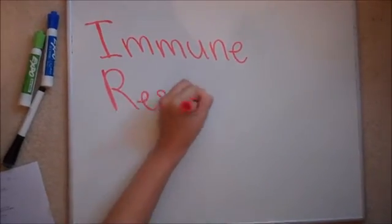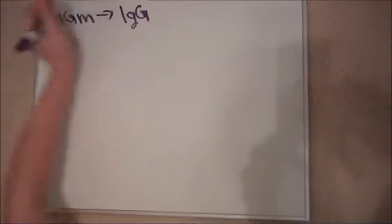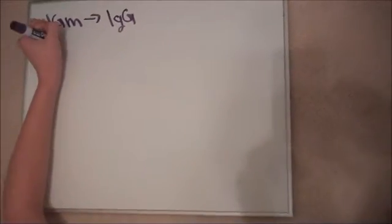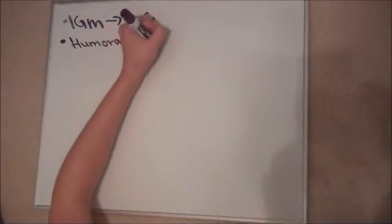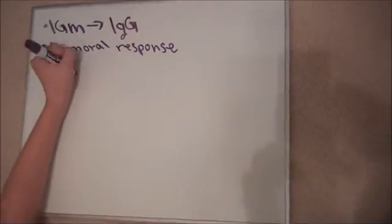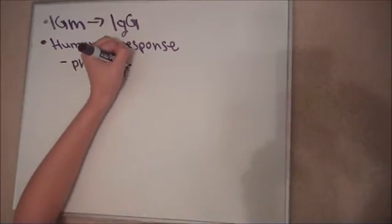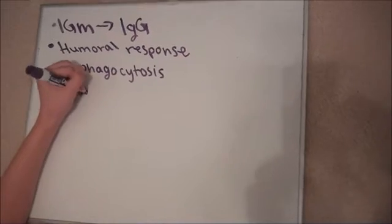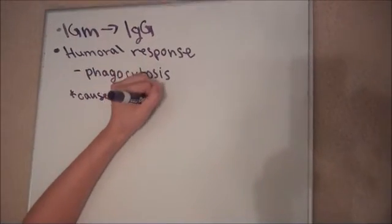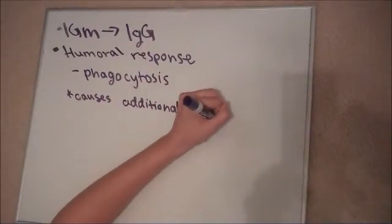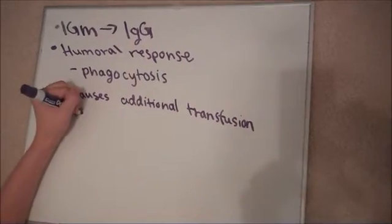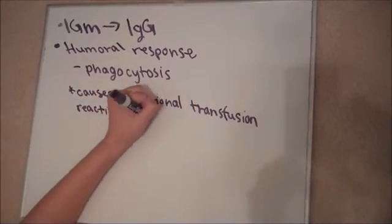This is when the immune response really kicks in. IgM antibodies are produced, which then switches to IgE antibody production. The body responds to the transfusion by producing a humoral response. This means that the antibodies in the patient cover the transfused red blood cells. This produces a chain reaction involving enzymes that ends with holes being punched in the cell membrane.